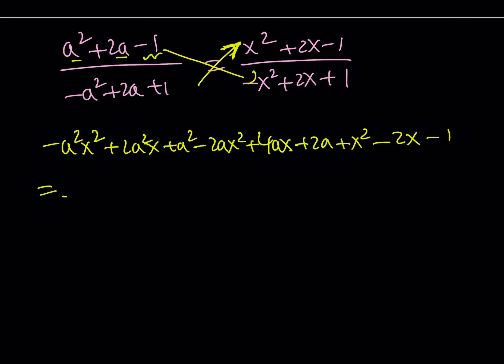Distribute. That's going to give me negative a squared x squared. I'm distributing the negative a squared first. Minus 2a squared x and then plus a squared. And then I'm going to distribute to 2a over this. 2ax squared plus 4ax minus 2a. And finally, I'm going to distribute the positive 1. That's going to give me x squared plus 2x minus 1.